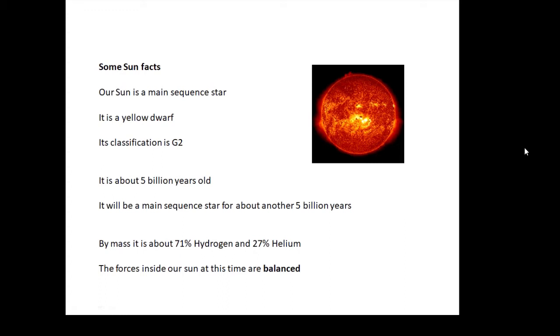It's a yellow dwarf, its classification is G2. It's a G2 type star. It's about 5 billion years old and it'll be on the main sequence for about another 5 billion years, so it's middle-aged, in the middle of its life.